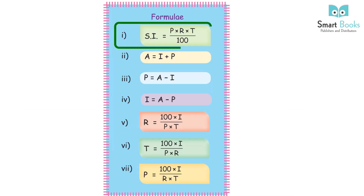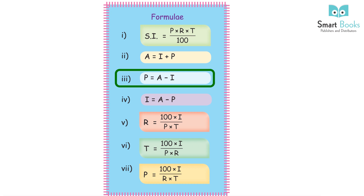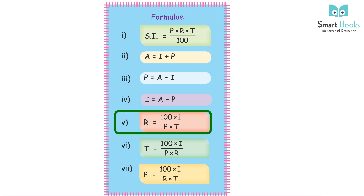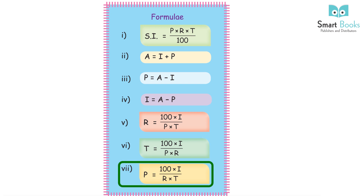Formula Summary: (1) SI = P × R × T ÷ 100. (2) A = I + P. (3) P = A − I. (4) I = A − P. (5) R = 100 × I ÷ (P × T). (6) T = 100 × I ÷ (P × R). (7) P = 100 × I ÷ (R × T).